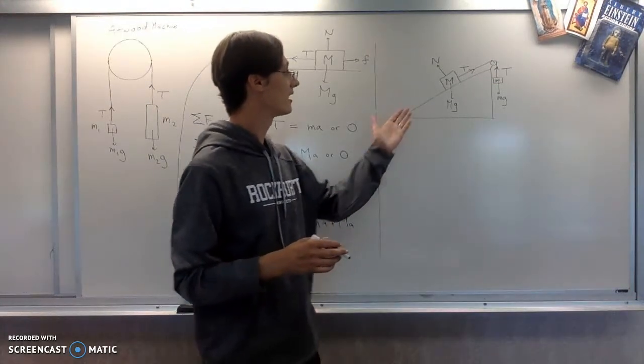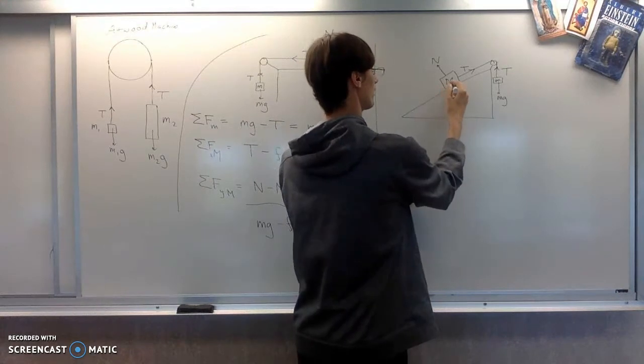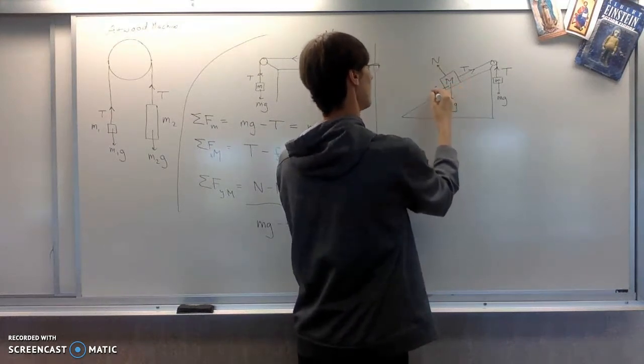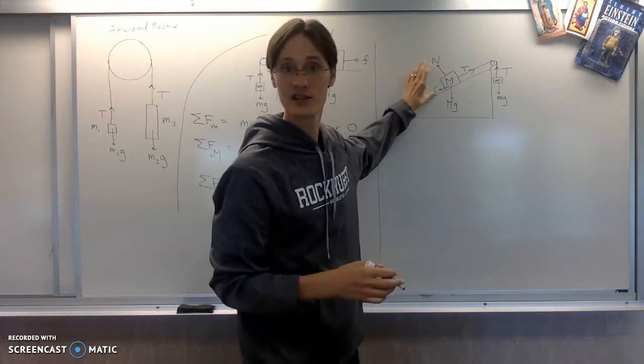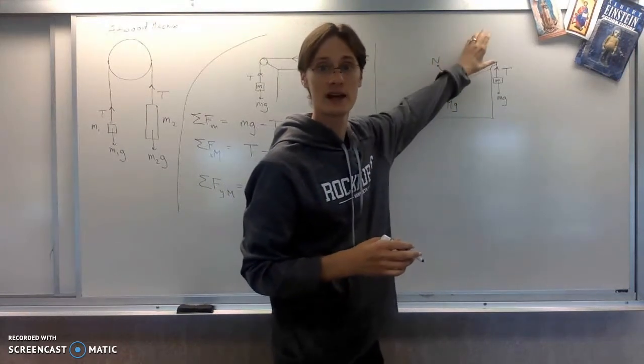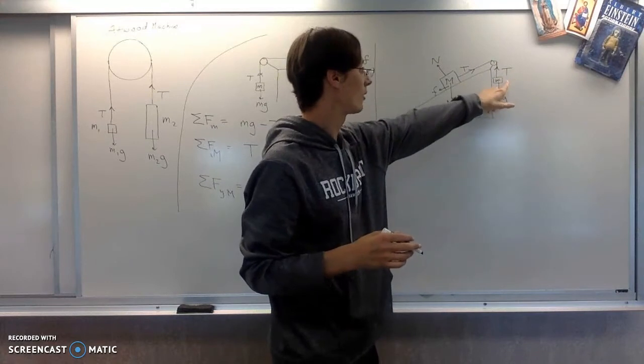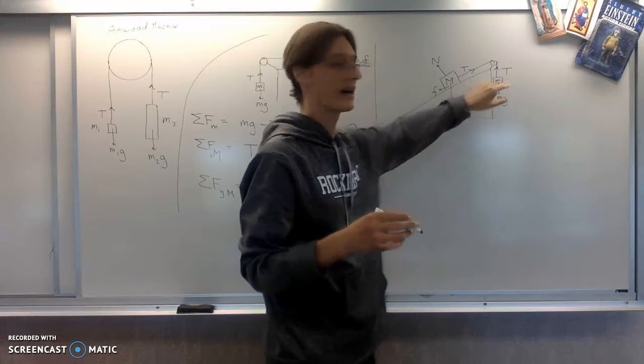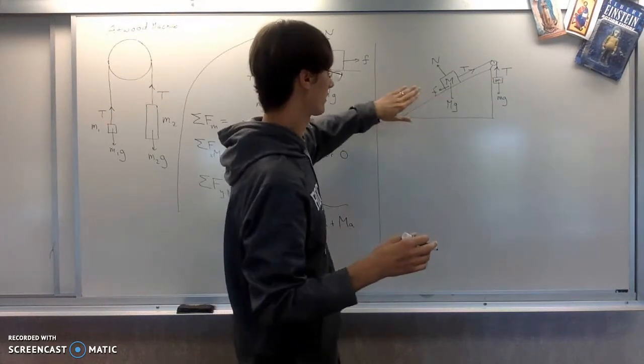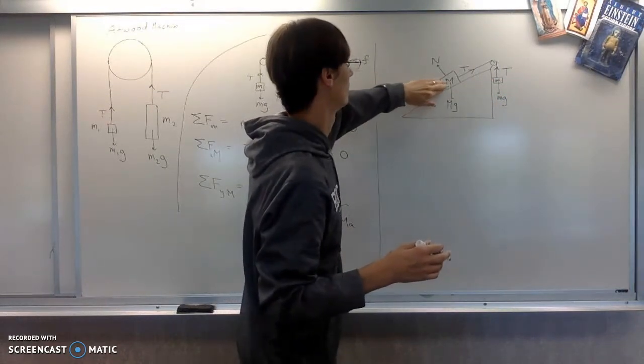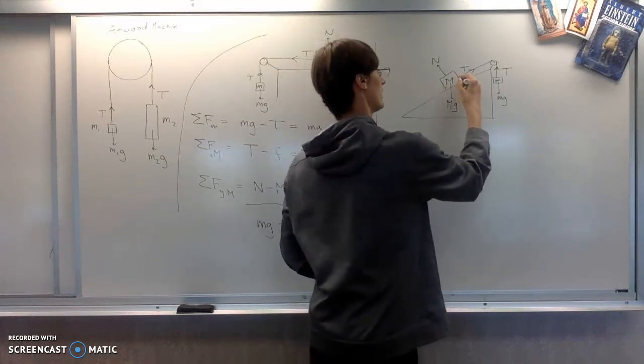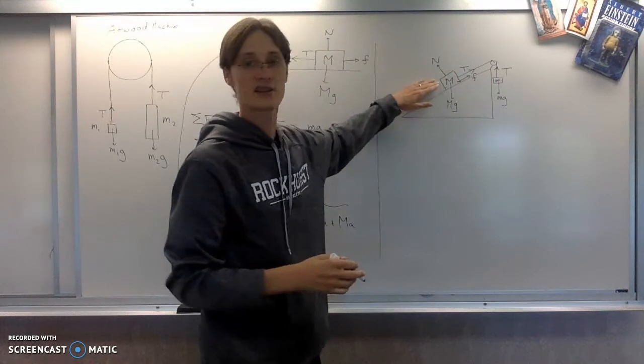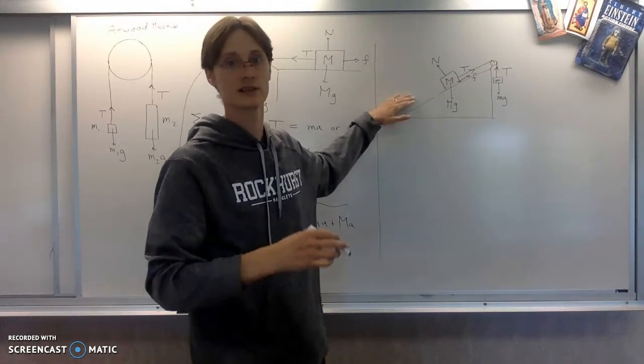So the direction of friction could go either way. Friction might be down if they say the system is sliding this way. Or, if they say what's the maximum weight that you could hang here before it starts to slide.